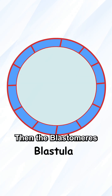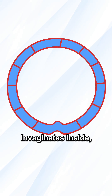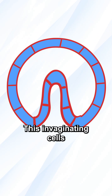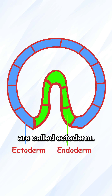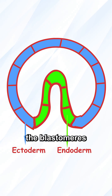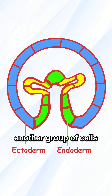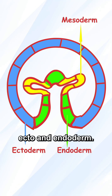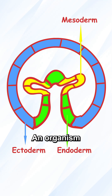Then the blastomeres at one side of the blastula invaginate inside. These invaginating cells are called endoderm; the remaining cells are called ectoderm. Then some of the blastomeres differentiate into another group of cells in between the ecto- and endoderm — these cells are called mesoderm.